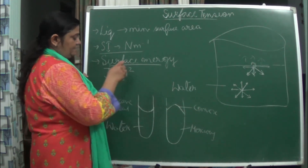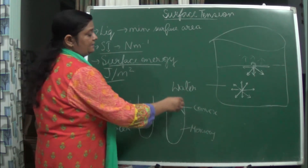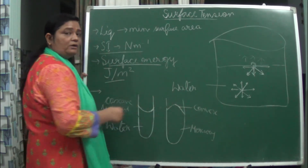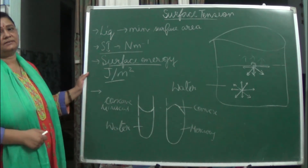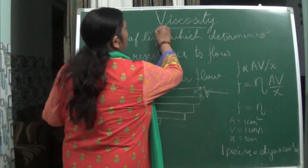This is done in order to minimize the surface pressure or instability at the surface — the tension created at the surface. Water takes the shape of a concave meniscus and mercury takes the shape of a convex meniscus. Now let us study viscosity.